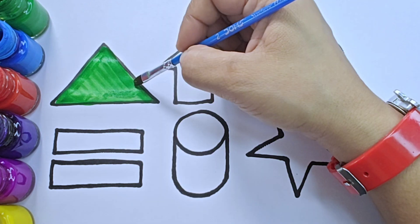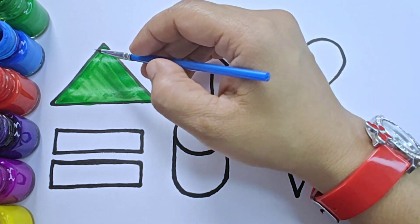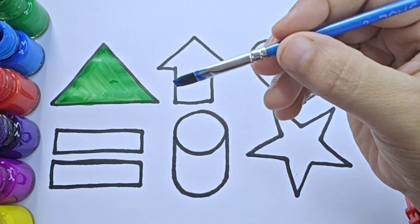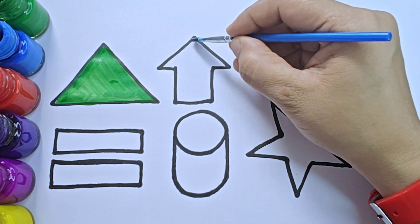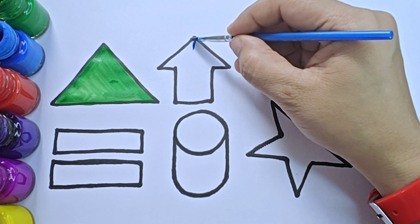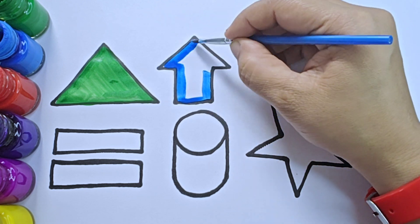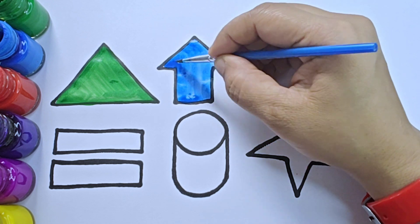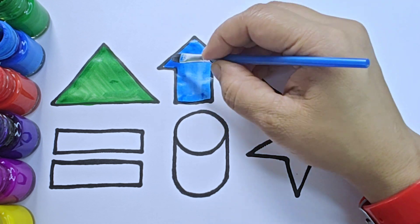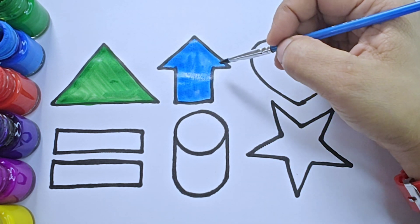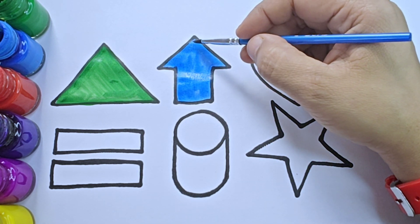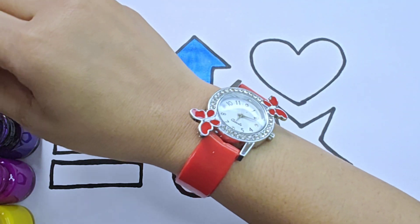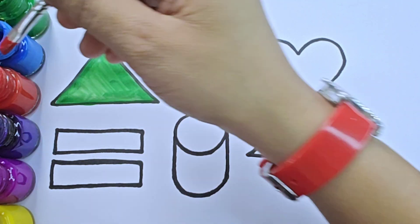Let us color these shapes. It is green color. It is triangle — it has three sides. It is blue color. This shape is up arrow, its direction is upward. It is red color.